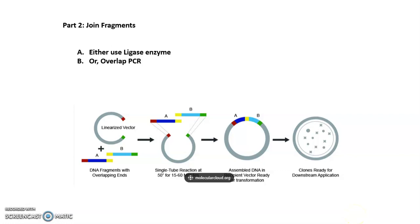This tutorial is actually two parts. Part one — I explained how to amplify these kinds of fragments. Part two is how to join these fragments. There are two different ways you can join fragments — even two, three, or four fragments according to your experiment design. The two different processes to join fragments are either using a ligase enzyme or overlap PCR.